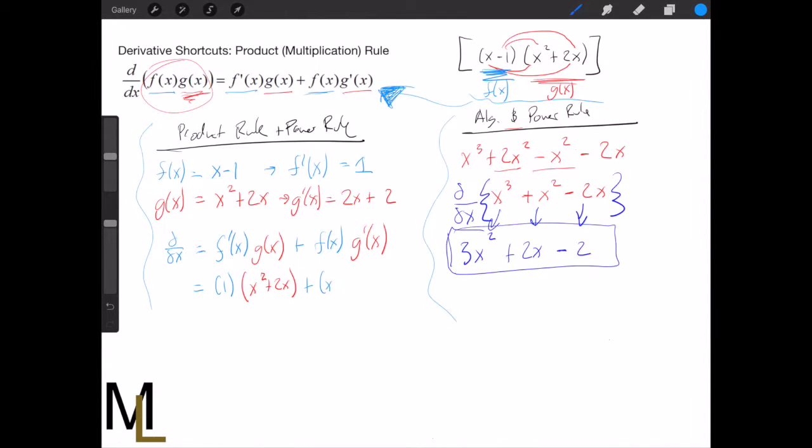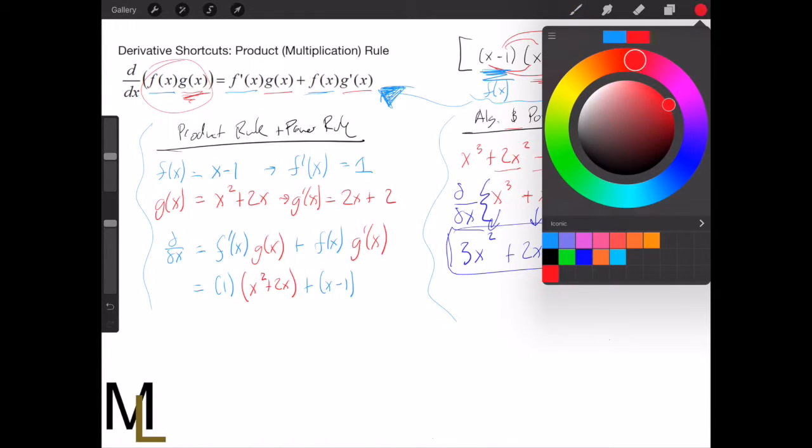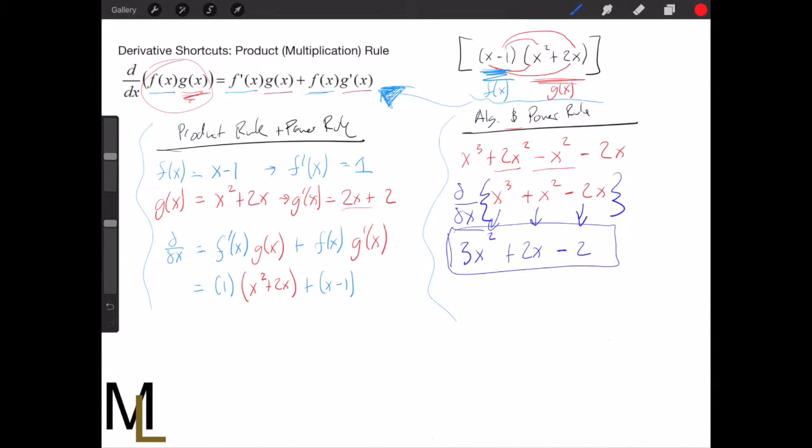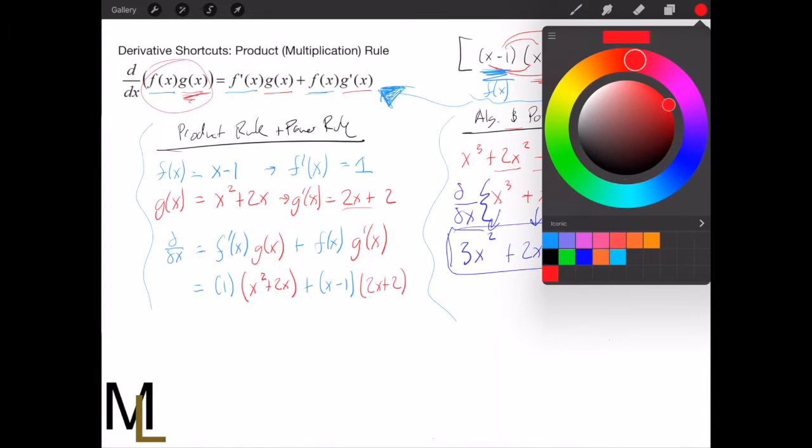Plus the first, which is x - 1, times the derivative of the second, which we have here is 2x + 2.